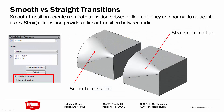Another option in a variable radius fillet is Smooth versus Straight Transition. In a smooth transition, the fillet tries to blend normal to adjacent faces, whereas the Straight Transition does not have that effect. The smooth transition gives a more spline-based shape, while Straight Transition gives a straight line between the two different sizes of radii in the fillet.